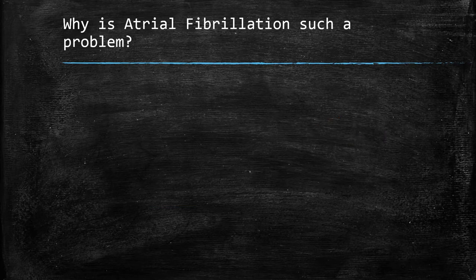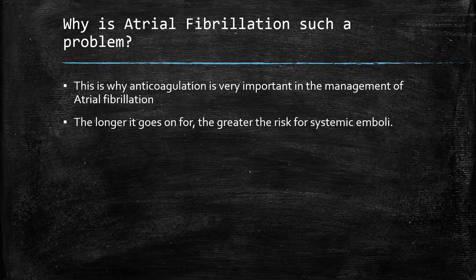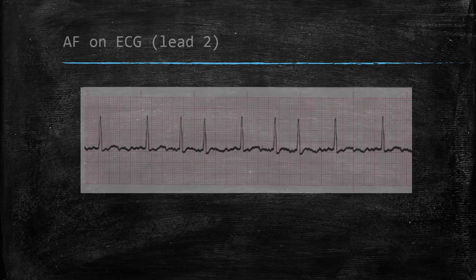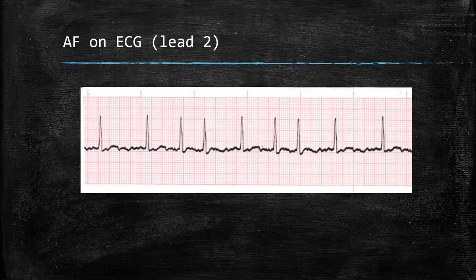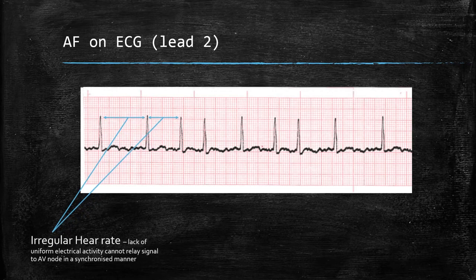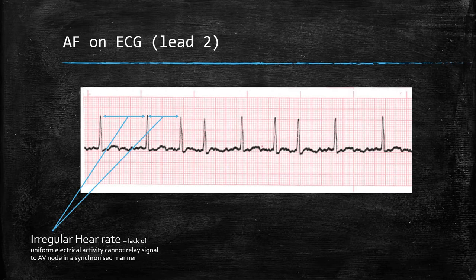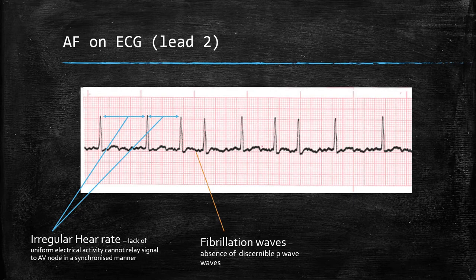The longer this goes on, the greater the risk for systemic emboli. Here is an ECG strip showing AF. The heart rate is irregular, as you can see from the distance between the R waves, and note the lack of a clear P wave. Instead, you have multiple fibrillation waves.